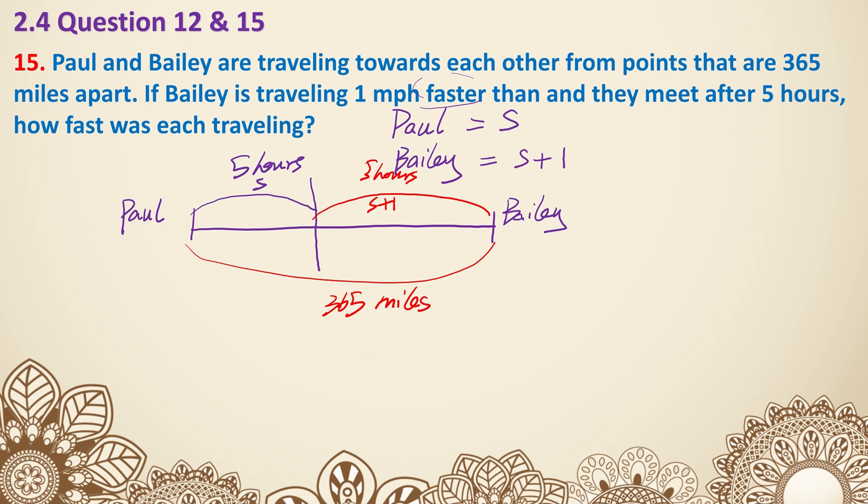So let's set up the equation. To calculate Paul's distance is going to be five times s. To calculate Bailey's distance is going to be five times s plus one. And they altogether add up to 365. So we have 5s plus 5s plus 5 equals 365, which means 10s equals, so 5s and 5s together is 10s. I'm also going to subtract the 5 from the other side already, 360. So divide both sides by 10. S is 36 miles per hour.